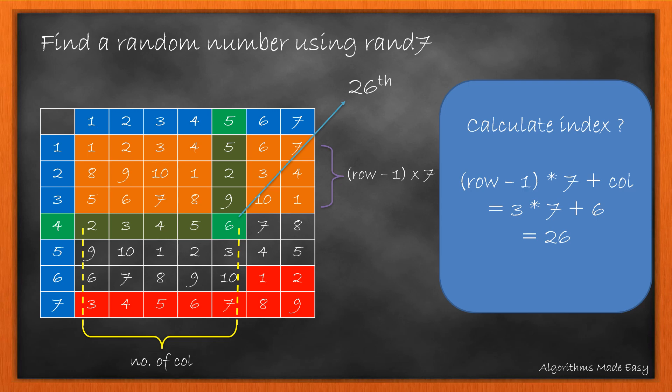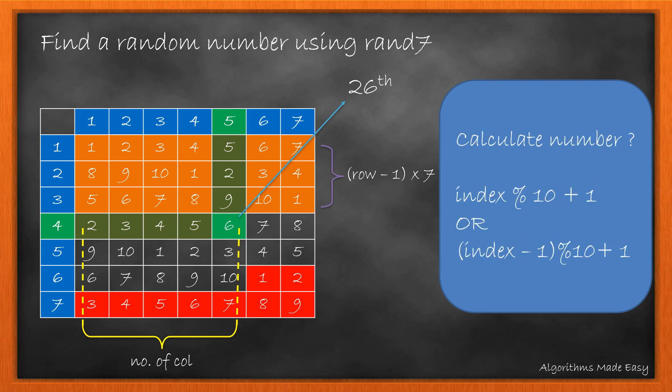So now that we have the index we need the number it has. Since the grid has numbers 1 to 10, we can easily find the number using number mod 10. But we need extra care for indexes in multiples of 10.